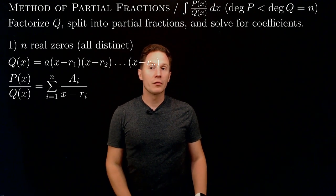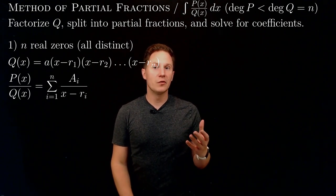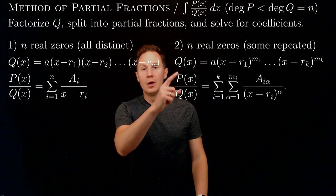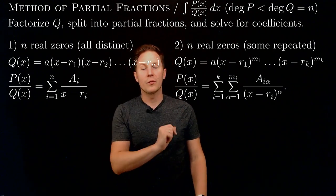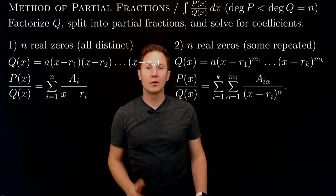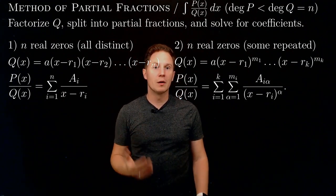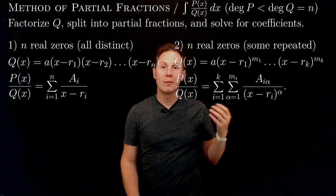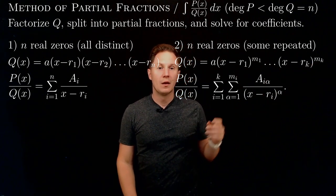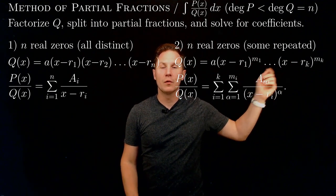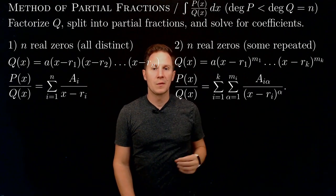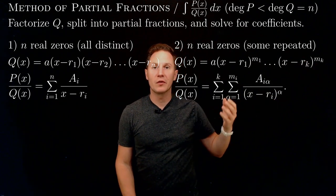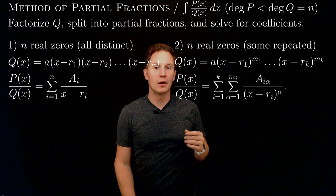Now, what if we still have n real zeros for q, but they are not all distinct — there are some repeated zeros? In that case, q factorizes as a product of linear factors where certain factors repeat, appearing more than once, as indicated by exponents that could be greater than 1. These exponents are called the multiplicities of those zeros r1 to rk, and the sum of these multiplicities should still give us n, the degree of q.